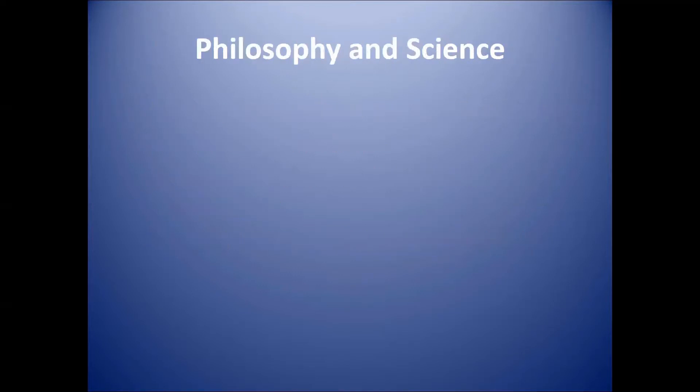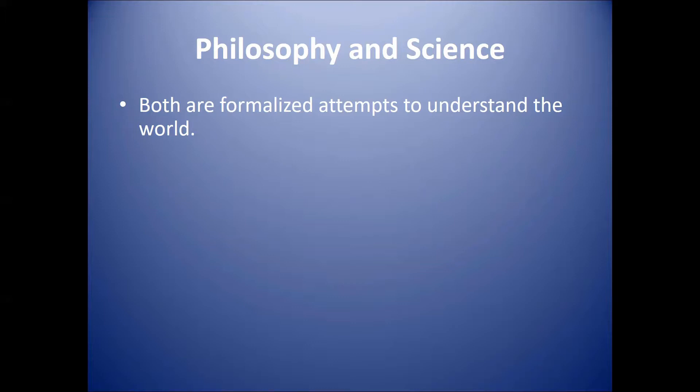So there are two primary methods of knowing what is true and what isn't true: philosophy and science. Science and philosophy both are formalized attempts to understand the world, to know the truth about the world.